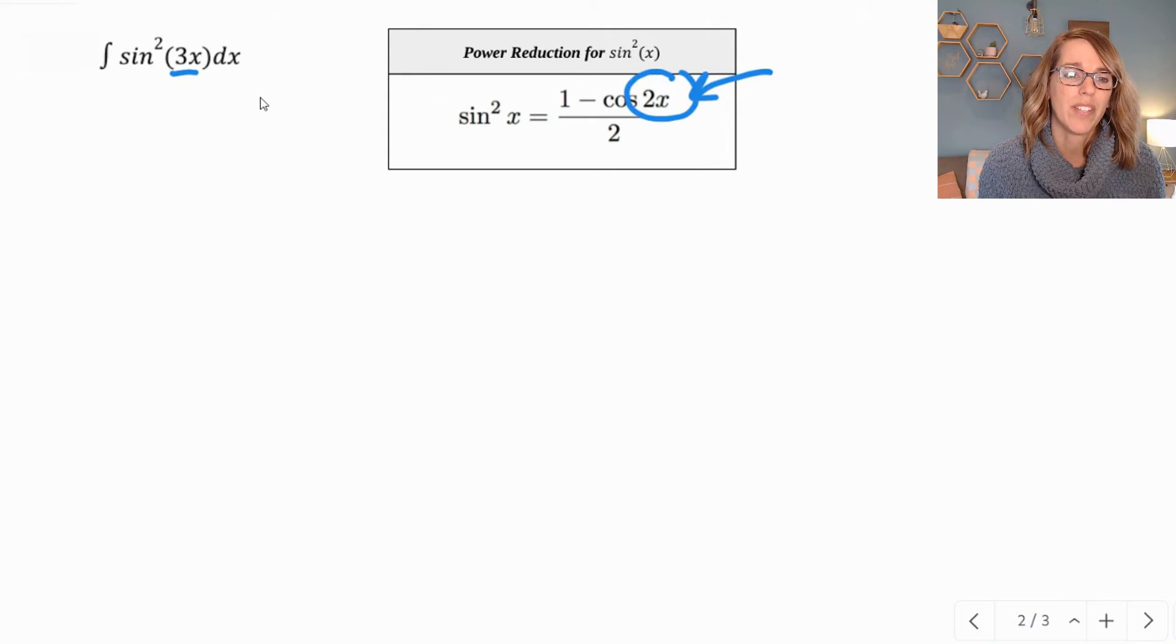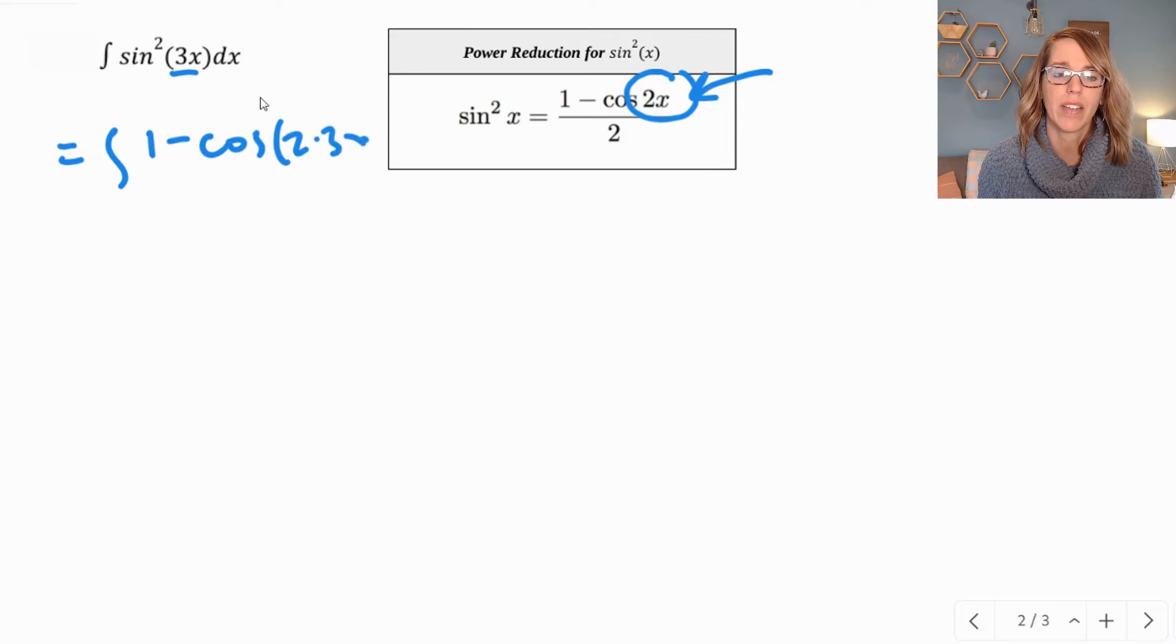So as I rewrite this one using my formula, I end up with the integral of 1 minus cosine twice the angle, so that's going to be 2 times 3x, divided by 2, and there's a dx here as well.